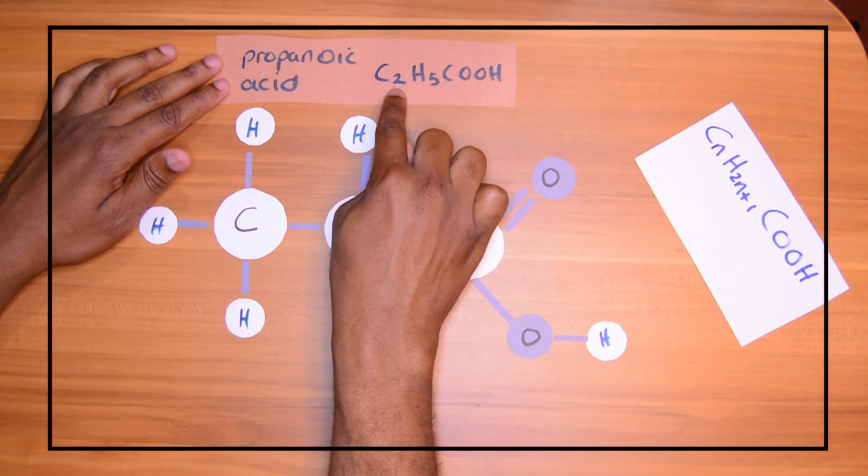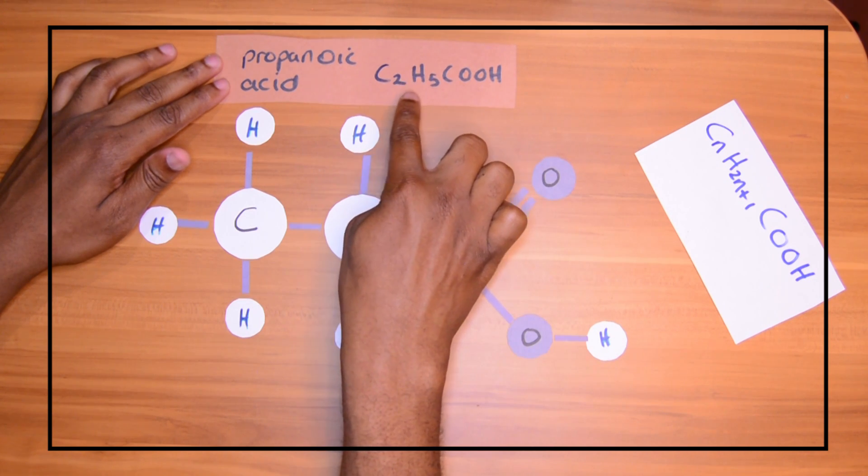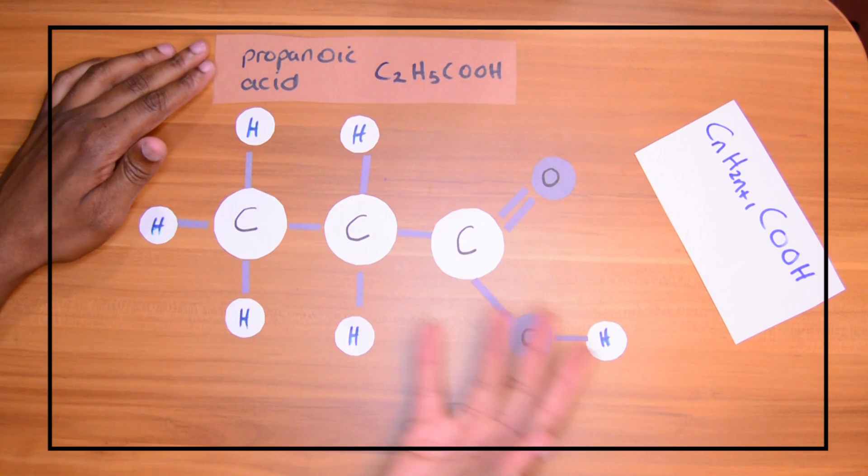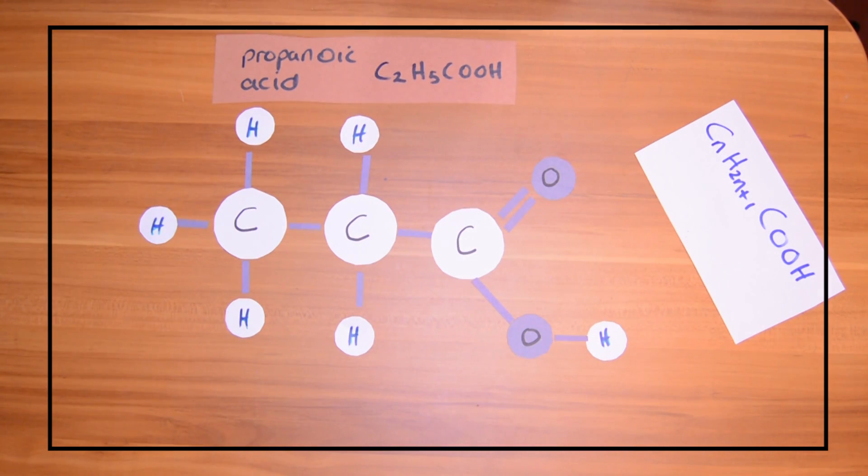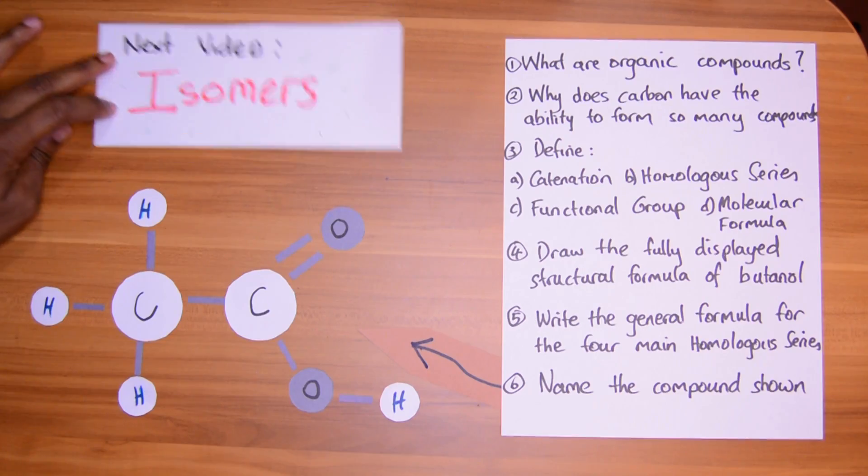So it is C2. And to get how many hydrogens you need, multiply this number by two, 2n, and add one. So two by two is four plus one is five. And then you write COOH. Propanoic acid. All these examples have three carbons in them and the functional group.